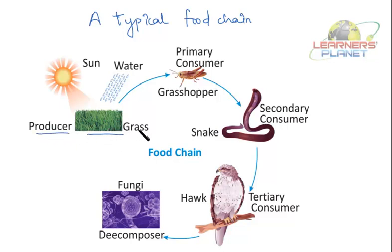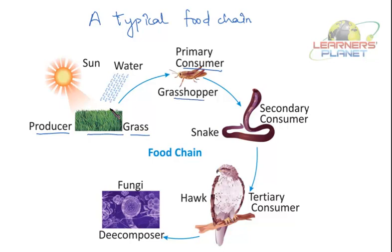Grass is the producer because it manufactures food by itself with the help of water, sunlight — that is warmth from the sun — and other nutrients present in the soil. Grass is producing its food, and that is why it is termed as producer. After that comes the primary consumer — consumer means who consumes this food or this grass. The grasshopper eats grass and that is why it is termed as primary consumer because it is the first one to consume.